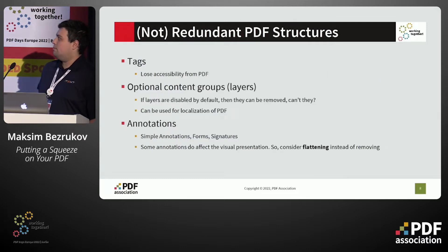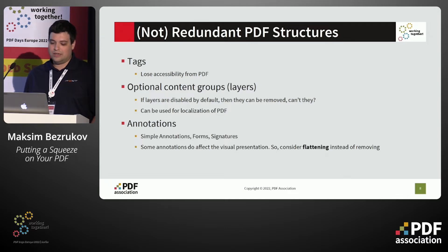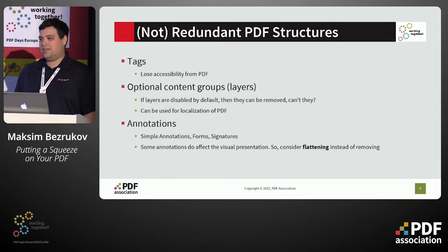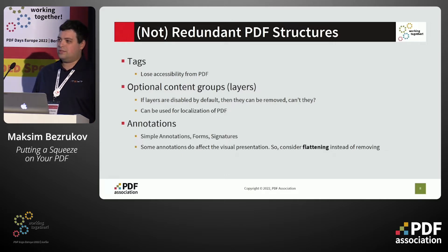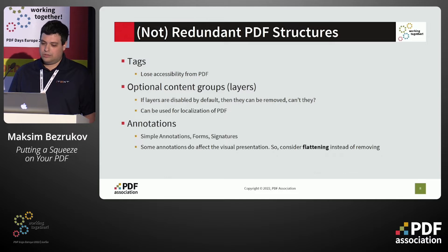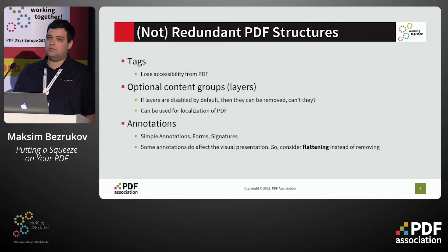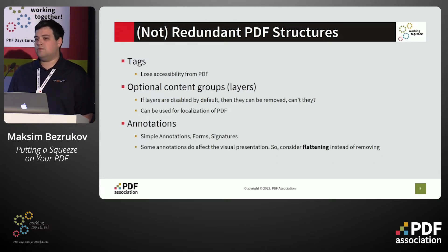Now, a bit about structures which don't directly affect appearance but are not recommended to remove. First, text: it doesn't affect visual appearance and printing the PDF will not include this text layer, but removing text removes accessibility from the PDF, so it's not recommended. Optional content groups or layers: if layers are disabled by default, we might think we can remove them since we don't see them, but this results in losing data from the PDF — for example, optional content groups may be used for localization.